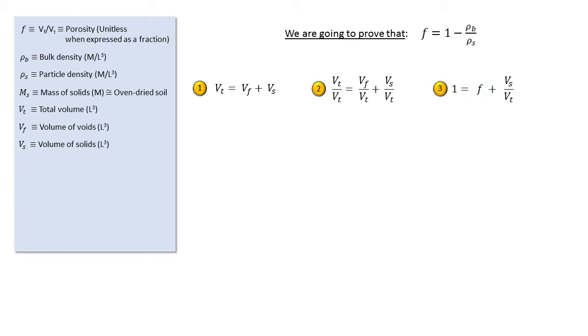Typically we know what is the total volume of our soil sample, but we generally don't know what is the volume of the solids. Since we are also solving for porosity, that means that we have two unknowns and only one equation. Therefore, we cannot solve this unless we find a different way of expressing the volume of the solids.